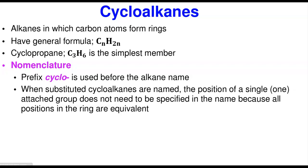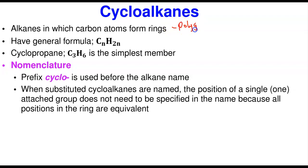What are cycloalkanes? Cycloalkanes are alkanes in which the carbons form a ring. A ring has to be closed — it's not an open chain. It's going to be a closed chain. Now it doesn't really look like a normal round ring; it's more or less like a polygon.